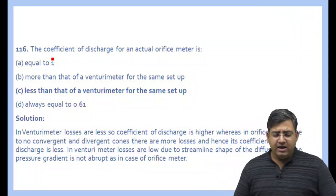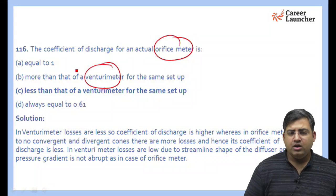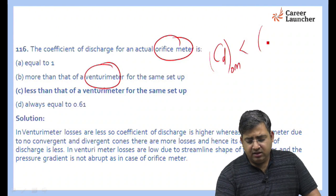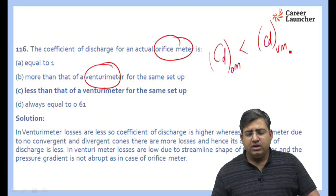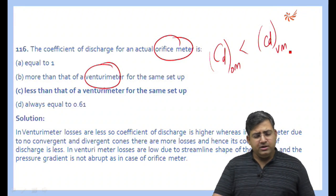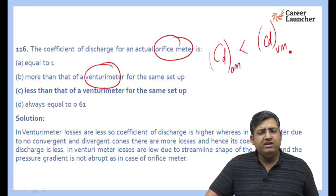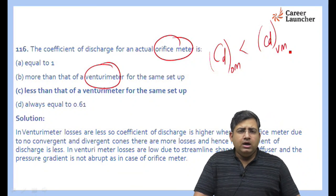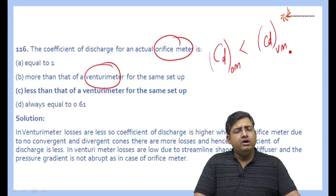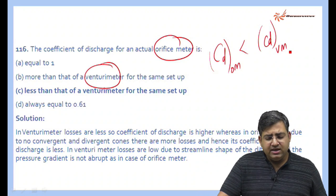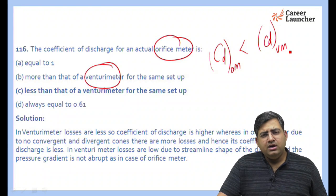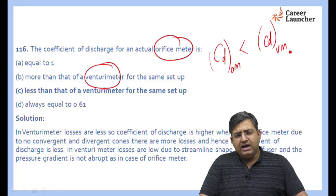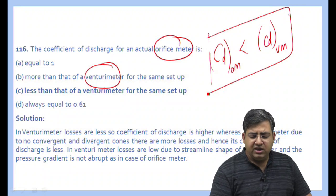The next question: the coefficient of discharge for an actual orifice meter compared to a venturi meter. The Cd of an orifice meter is less than the Cd of a venturi meter because orifice meters have greater discharge losses, resulting in less discharge quantity. In a venturi meter, losses are lower so discharge is more and Cd is higher. The right answer is C.